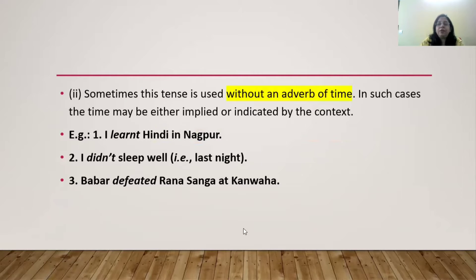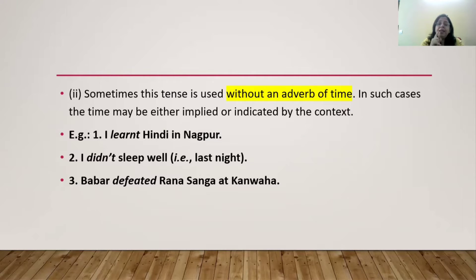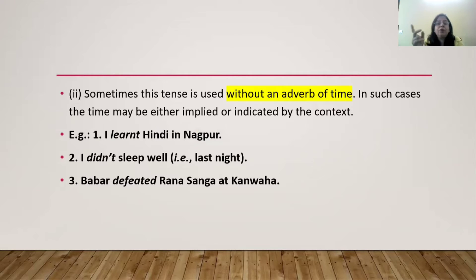Simple past tense can also be used without an adverb of time. In such cases, the time may be either implied or indicated by the context. For example, 'I learned Hindi in Nagpur.' 'I didn't sleep well' — that means last time. 'Babar defeated Rana Sangha at Kanvaha.' In all these three sentences, the verbs are used in the simple past, that is the second form of verb, but without an adverb of time.